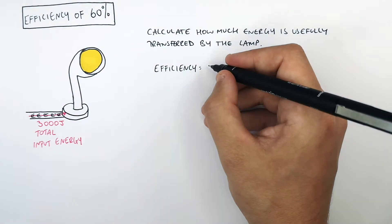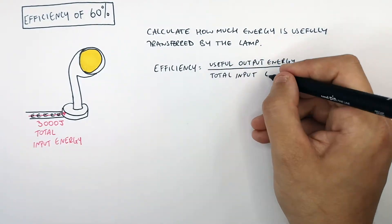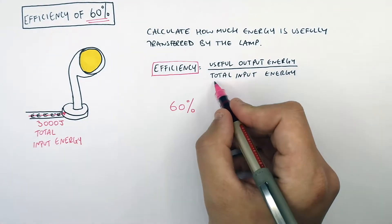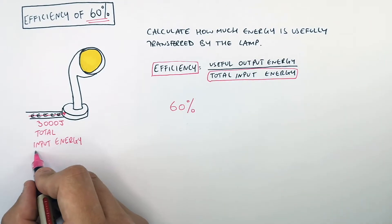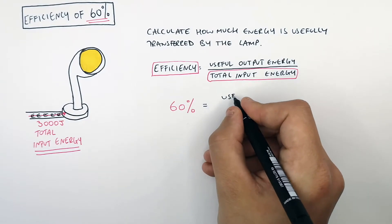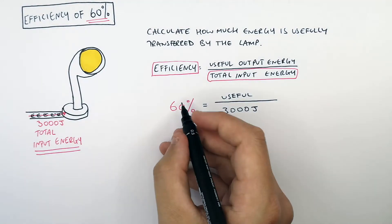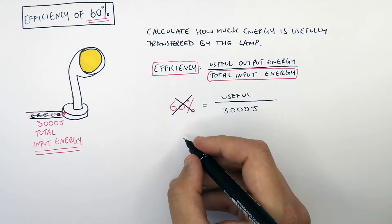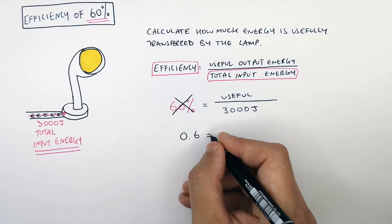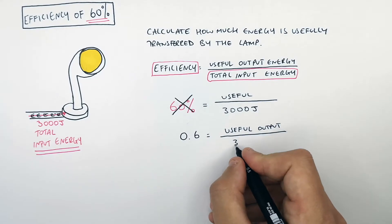Efficiency equals the useful output energy divided by the total input energy. We have the efficiency, 60%, and the total input energy, which is 3,000 joules. So 60% equals useful output energy divided by 3,000 joules. But we don't use 60% — you must convert it to 0.6. So 0.6 equals useful output energy divided by 3,000 joules.